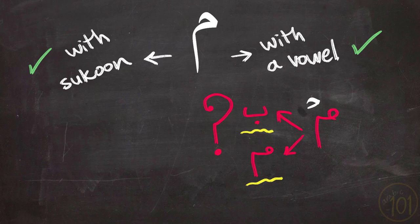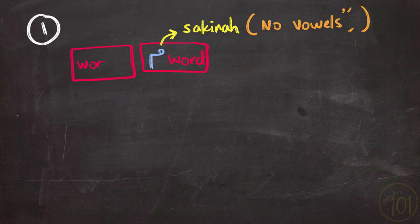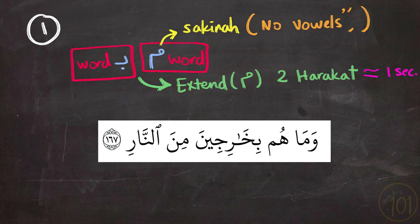First, if what comes after the Meem Sakina is a Ba', then you'll extend the Meem for two Harakat, which is about one second, like in these examples.